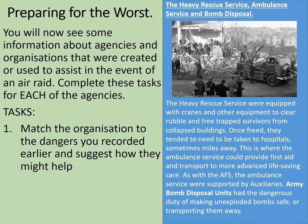There are several organisations in one here — make sure you do them all. The Heavy Rescue Service, the Ambulance Service, and Bomb Disposal. The Heavy Rescue Service were equipped with cranes and other equipment to clear rubble and free trapped survivors from collapsed buildings. Once freed, survivors needed to be taken to hospitals, sometimes miles away — this was where the Ambulance Service provided first aid and transport to more advanced life-saving care. The Ambulance Service was also supported by the auxiliaries. In addition, Army Bomb Disposal units had the dangerous duty of making unexploded bombs safe or transporting them away. Consider how these agencies helped and complete task one.